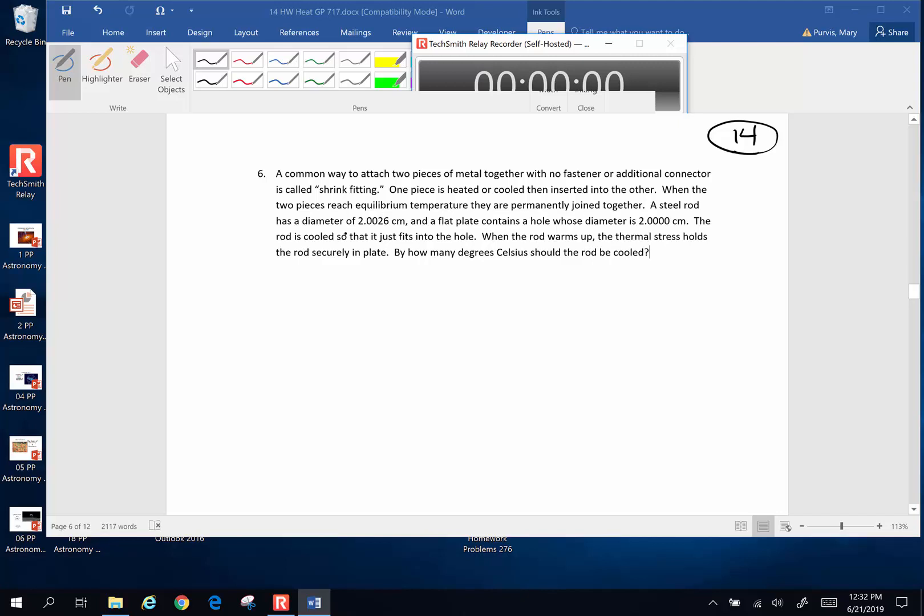A steel rod has a diameter or an original length of 2.0026 centimeters and a flat plate contains a hole whose diameter is 2.000 centimeters. The rod is cooled so that it just fits into the hole. When it warms up, the thermal stress is going to hold the rod securely in place. By how many degrees should the rod be cooled in order to make this change?